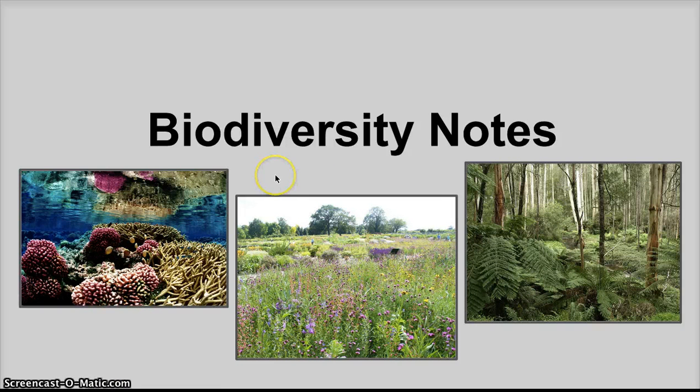I have three examples of very biodiverse habitats here. Coral reefs, which we first learned about in climate change. Prairies, which are grasslands that contain a lot of flowering species and some trees. You find these a lot in the Midwest, and we have pockets of them here in Oregon. And then rainforests, including tropical rainforests or coastal rainforests like we have here.